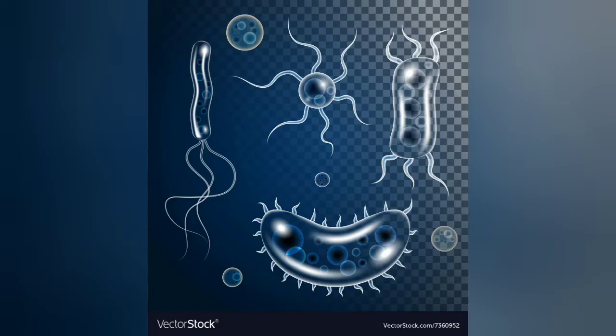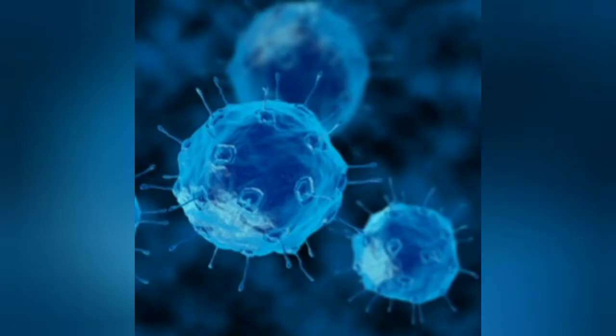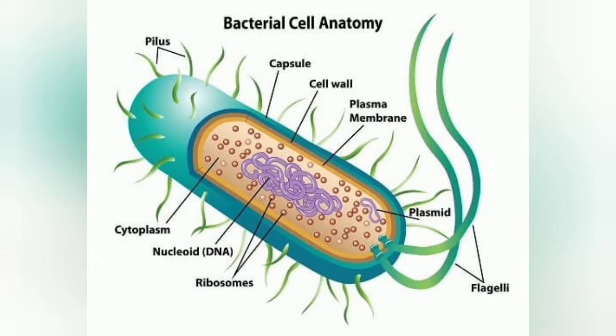Most bacteria share the same major parts: a protective cell wall, a cell membrane, and a strand of DNA. Many bacteria also have flagella, structures that help them move. All bacteria reproduce by binary fission — they grow until they split into two new identical cells.